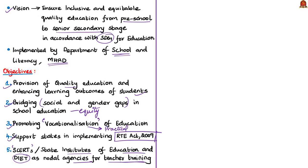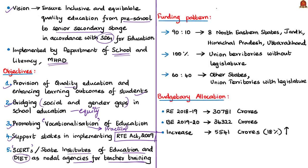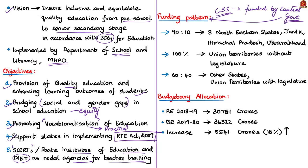Samagra Shiksha Abhiyan is a centrally sponsored scheme — implemented in states by respective state governments but largely funded by the central government. There are three funding patterns: the fund sharing ratio between center and states is 90:10 for the eight northeastern states (Arunachal Pradesh, Assam, Manipur, Meghalaya, Mizoram, Nagaland, Sikkim and Tripura) and three Himalayan states (Jammu and Kashmir, Himachal Pradesh and Uttarakhand). It is 100% centrally funded for union territories without legislature, and 60:40 for all other states and union territories with legislature.